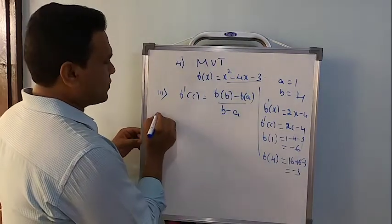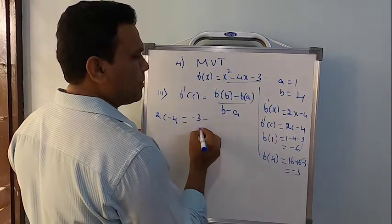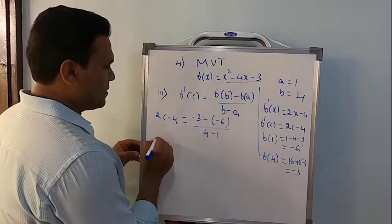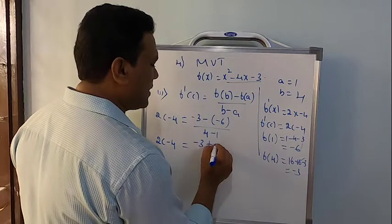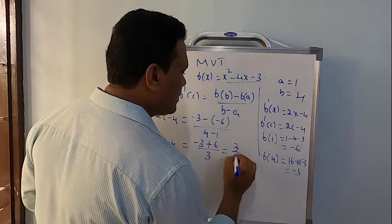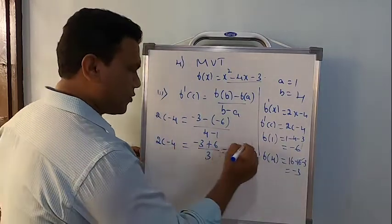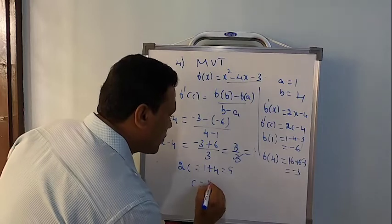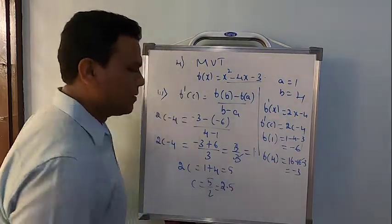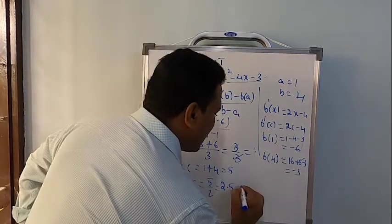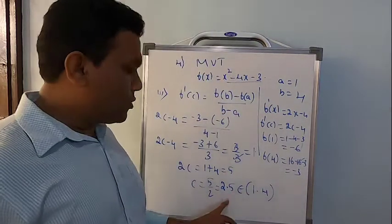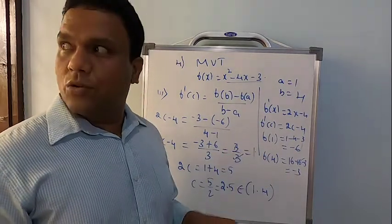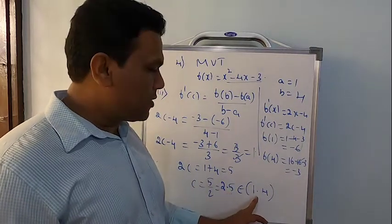Substitute back: f dash of c = 2c − 4 = [f(b) − f(a)] / (b − a) = (−3 − (−6)) / (4 − 1). Let's simplify: 2c − 4 = (−3 + 6) / 3 = 3/3 = 1. So 2c − 4 = 1, shift −4: 2c = 5, therefore c = 5/2, which is approximately 2.5. Now the question is: does this exist in the open interval (1, 4)? Certainly — 2.5 is a number which lies between 1 and 4.